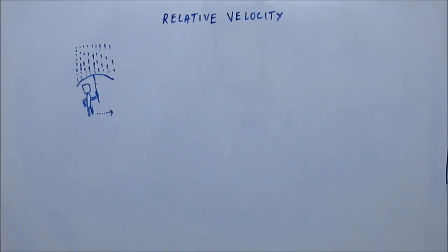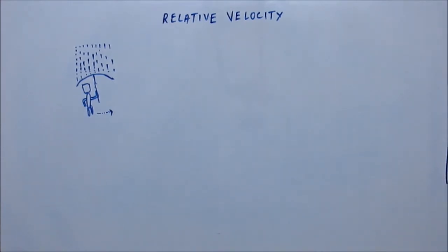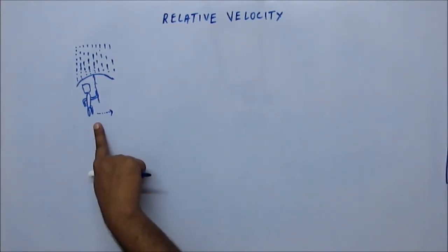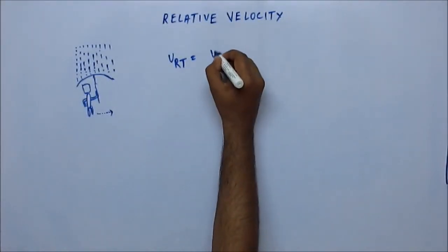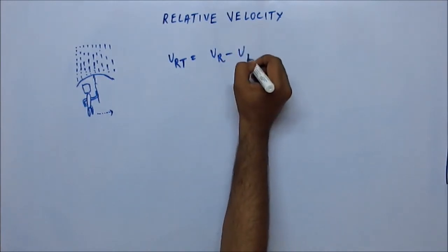The rain is coming vertically downward and Tom starts to move fast. The question is: will he have to change the orientation of his umbrella? Let's analyze this using vectors. The velocity of rain with respect to Tom equals the velocity of rain minus the velocity of Tom.